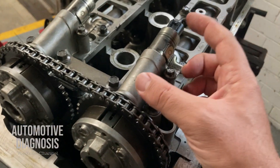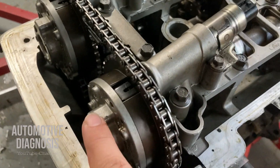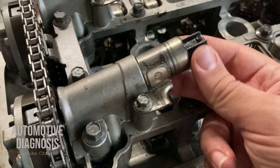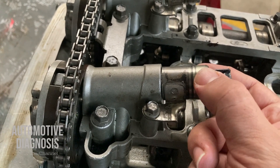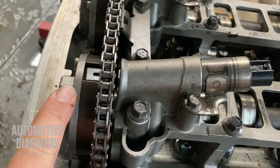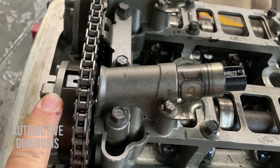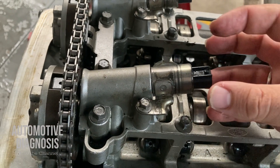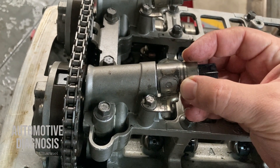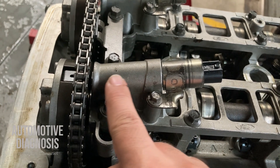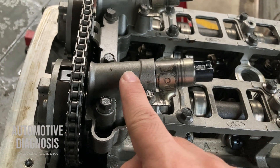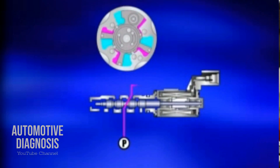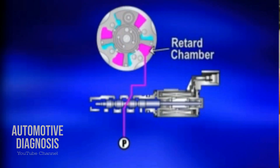This system works by engine oil. For each VVT there is a VVT solenoid valve — which is this one. The VVT solenoid valve provides the engine oil for the VVT mechanism itself. Anytime the ECM wants to activate or change the valve timing, it activates this solenoid valve. Right here we have some oil passages, and by activating this one, engine oil can get into the VVT mechanism.